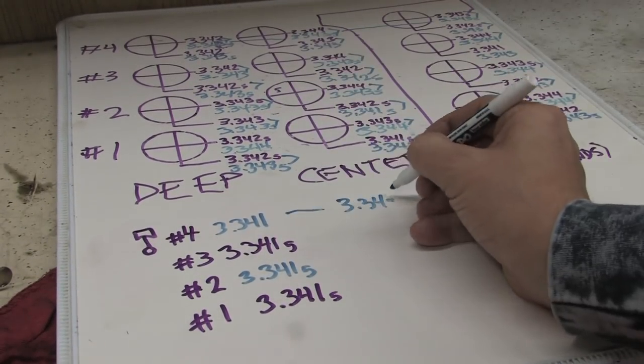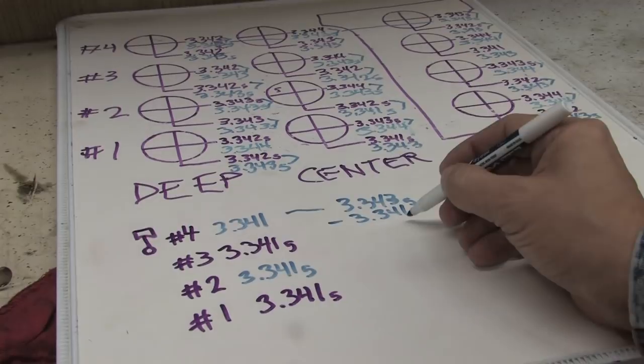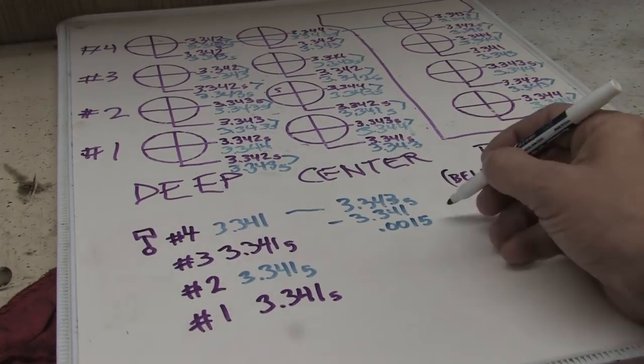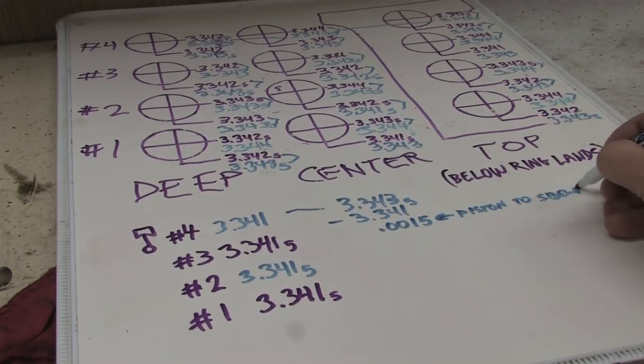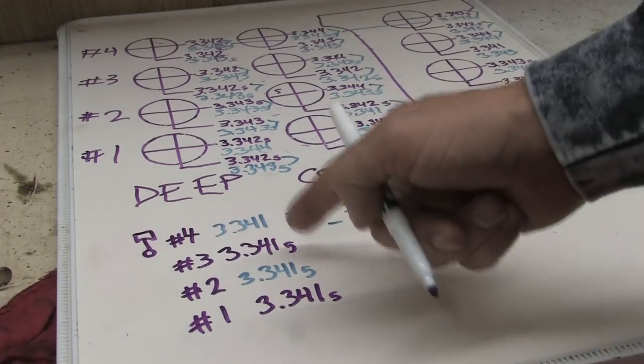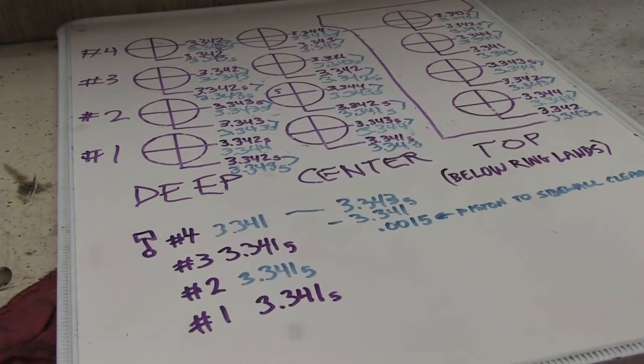Next, take your measurements and subtract them from the low and high measurements of the bores they came from. This gives you low and high measurements for your piston to cylinder wall clearances. Repeat this for all four bores and check these numbers to see if they fall within spec.